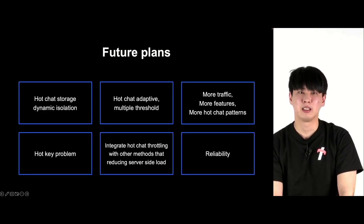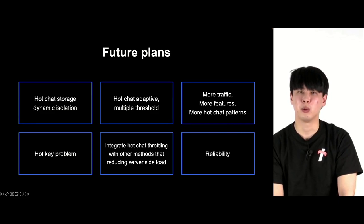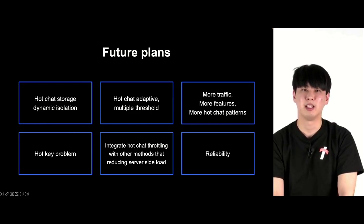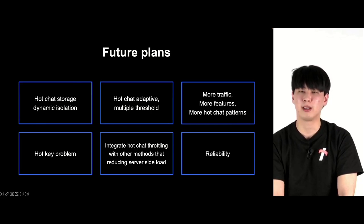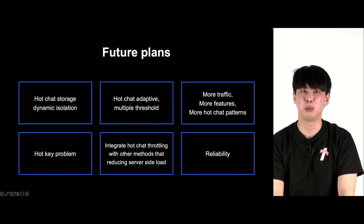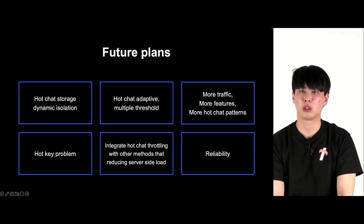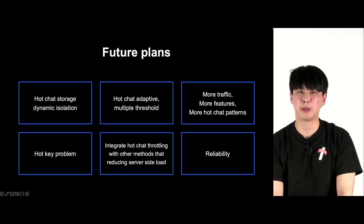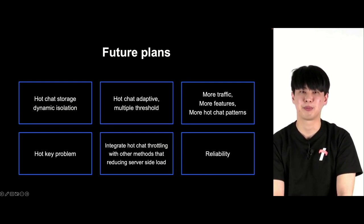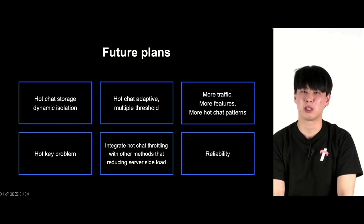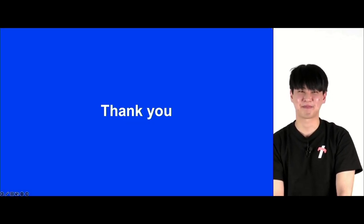This is the future plan going forward. When there's a hot chat, we need to move the hot chat data storage to a separate storage, or find ways to distribute the hot chat load. The way to differentiate hot chat from others is to apply dynamic values. Depending on the activity of hot chats, we could apply higher throttling to more active chats. The open chat service is bound to grow, creating more traffic and more functionalities. There will be different patterns of hot chats that we are not even aware of yet. We need to be flexible and continue to improve the architecture of the open chat server to maintain a reliable service that can support service growth. Thank you very much.